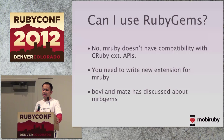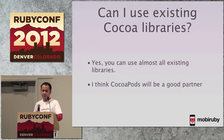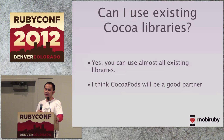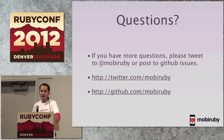The second question: can I use RubyGems? No — mRuby does not have compatibility with CRuby extension APIs. You need to write new extensions for mRuby. There have been discussions between community members about an mRuby version of RubyGems. The third question: can I use existing Cocoa libraries? Yes, you can use almost all existing libraries. I think CocoaPods will be a good partner — it's a library manager for Xcode. If you have more questions, please tweet to the MobiRuby account or post to GitHub issues.